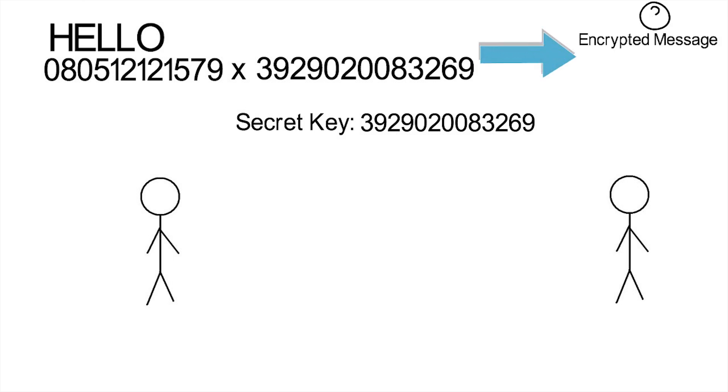If someone intercepts it, they could not decipher it. If they knew they were looking for two prime numbers that go into this big number, even with a computer, it would take a long time to figure out, at least if the numbers are really big. So they won't know what the message actually says, but your friend would just divide by the secret key and recover the message.